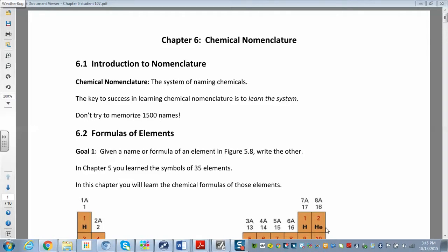Okay, in Chapter 6 we're going to learn how to name a whole bunch of different kinds of chemical compounds. And the idea is that you want to learn the systems. Don't try to memorize 1,500 names. You're just going to learn the rules to how to play the game, and then you'll play the game.